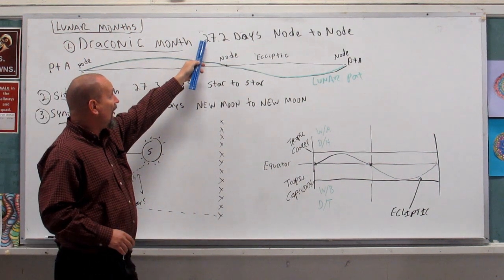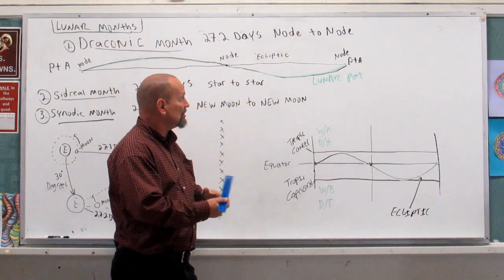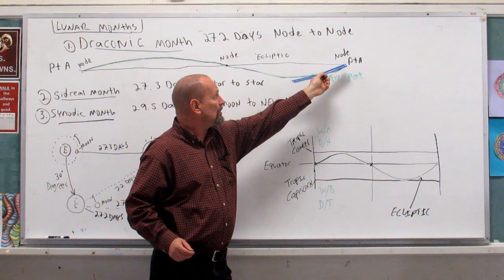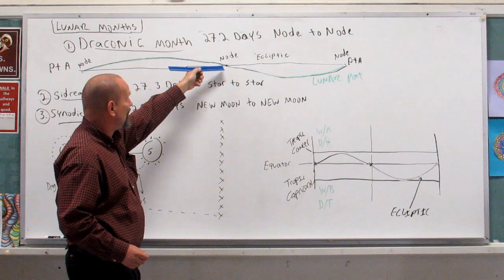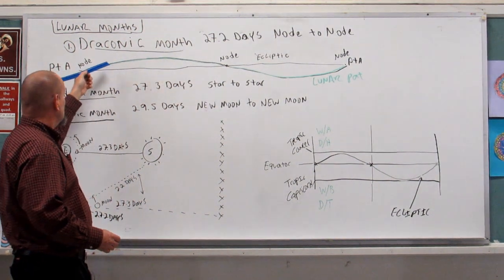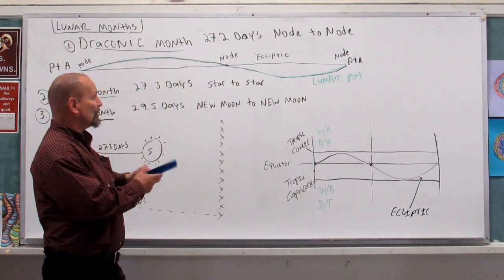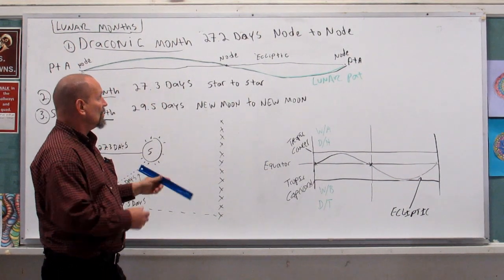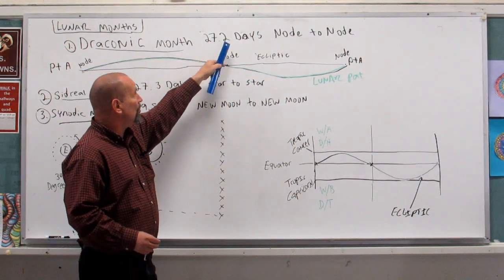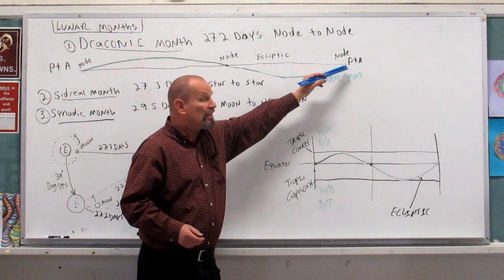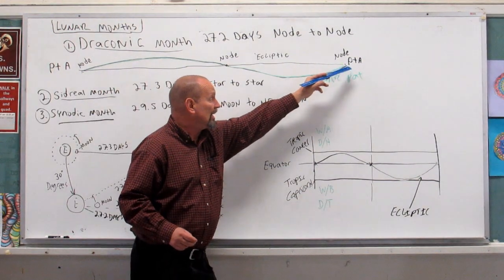Our first type of lunar month is what's called a draconic month. It lasts twenty-seven point two days, going from what's called node to node. The node is the point where the moon crosses over the ecliptic line — comes down, goes back up, crosses over the ecliptic line, comes around and back down. The time from point A to point A, wrapping around, is twenty-seven point two days — going from this node back again to this node.